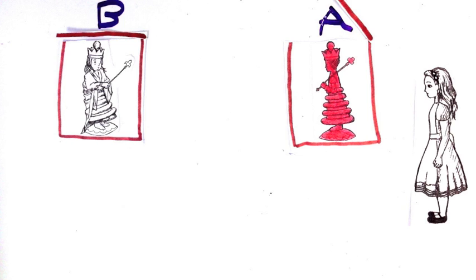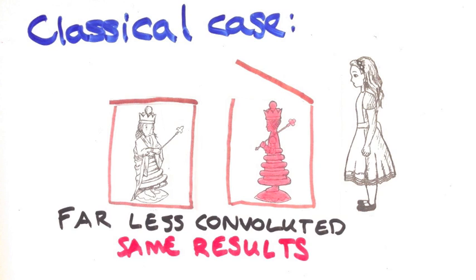I'm sure at this point that a lot of you are skeptical. Why should we accept the quantum picture, when it's obvious that the classical version has the same results by a far less convoluted method? Couldn't it be the case that objects aren't actually in superpositions at all? This is a very good concern, and one we'll be taking seriously.